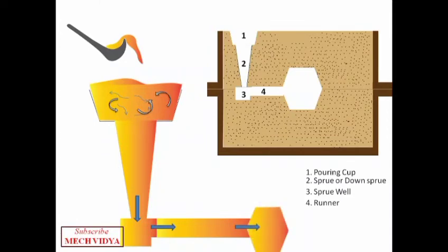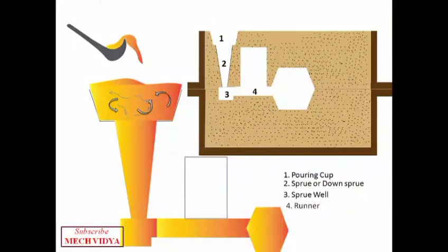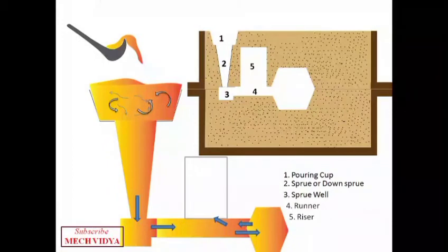Now a very important component is the riser. This is the last part of the gating system to get filled and solidified. Once the molten metal fills the mold, it then goes on to fill the riser. But the question here is, why do we want to fill the riser when the mold is already filled? Our main intention is to fill the mold, so once the mold is filled up, why do we want to pour more molten metal into the riser?